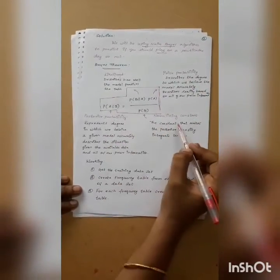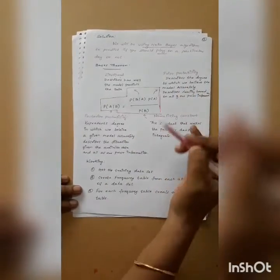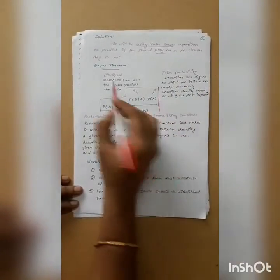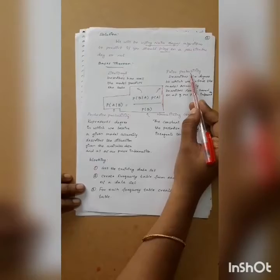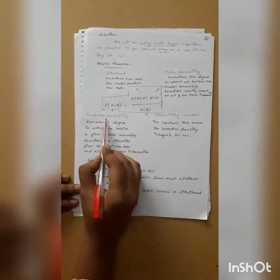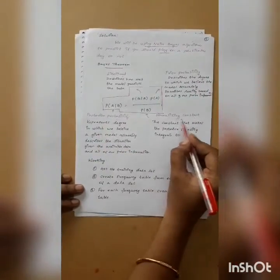Before explaining these concepts, we can get into the problem so that you can understand what is the likelihood, what is the prior probability, what is the posterior probability, and the normalizing constant.